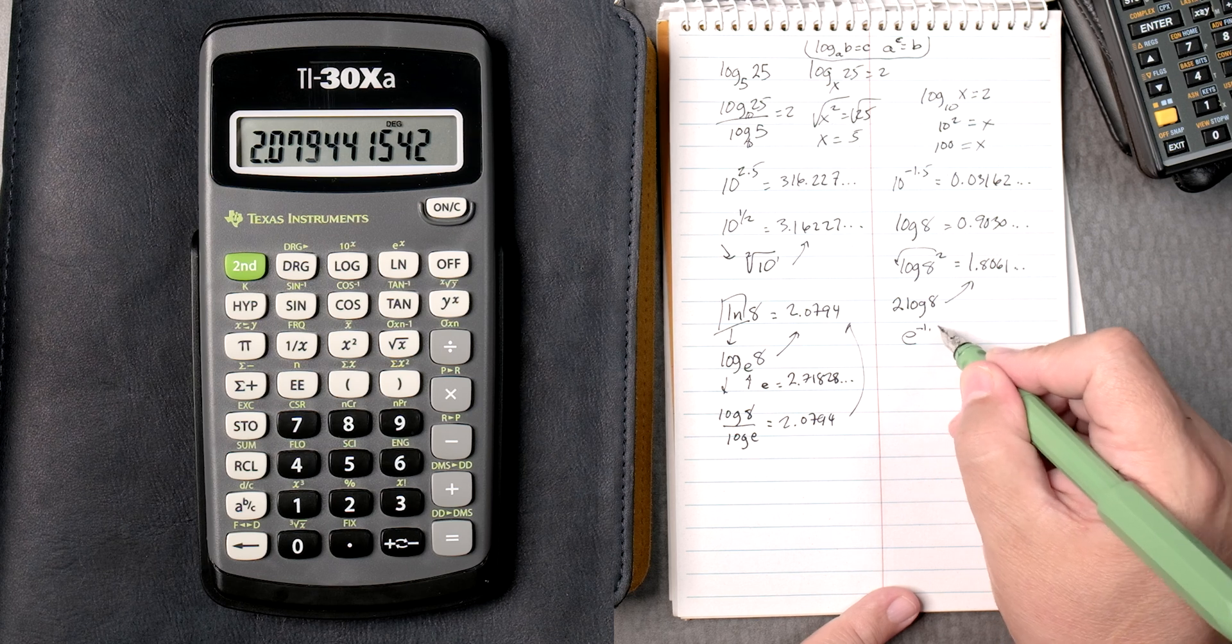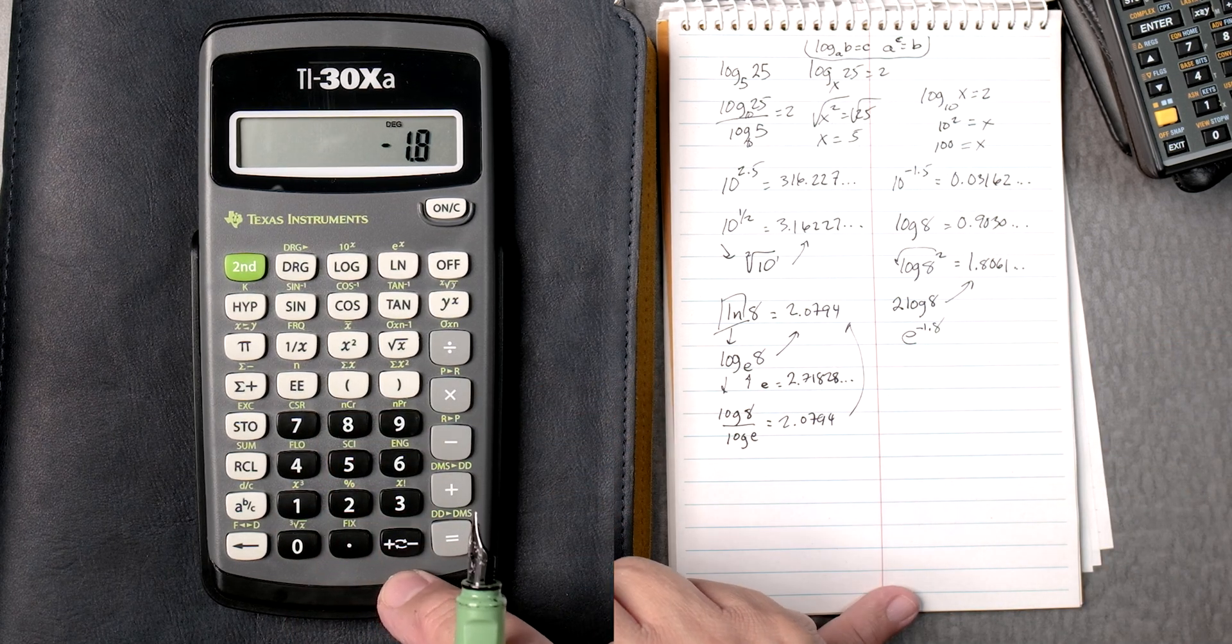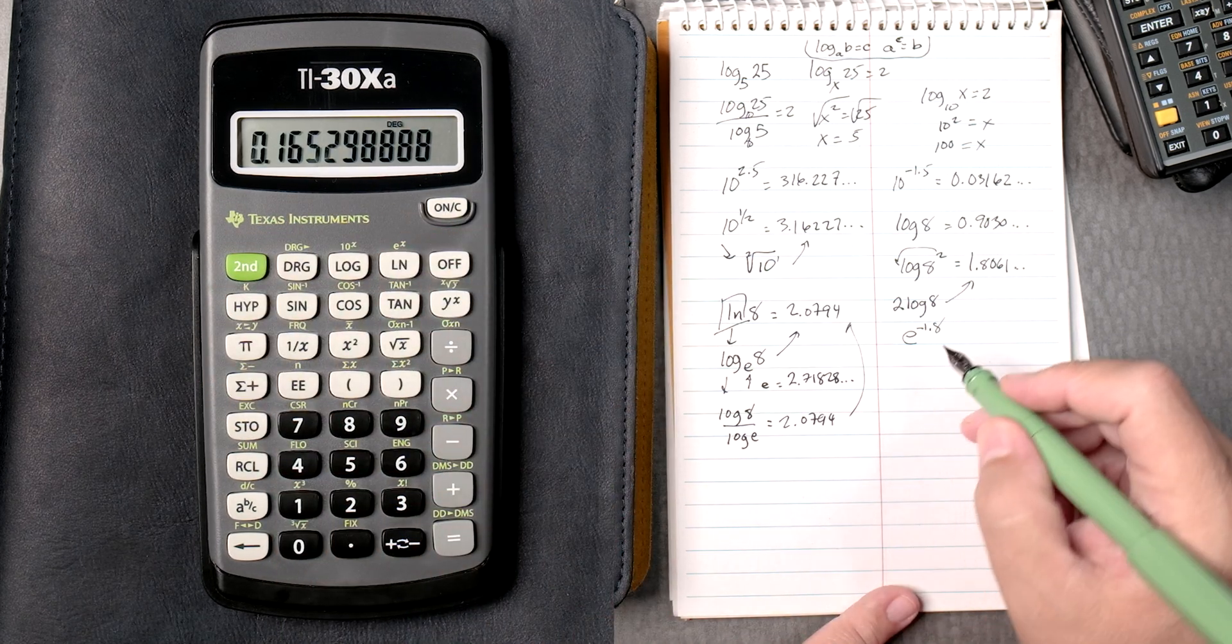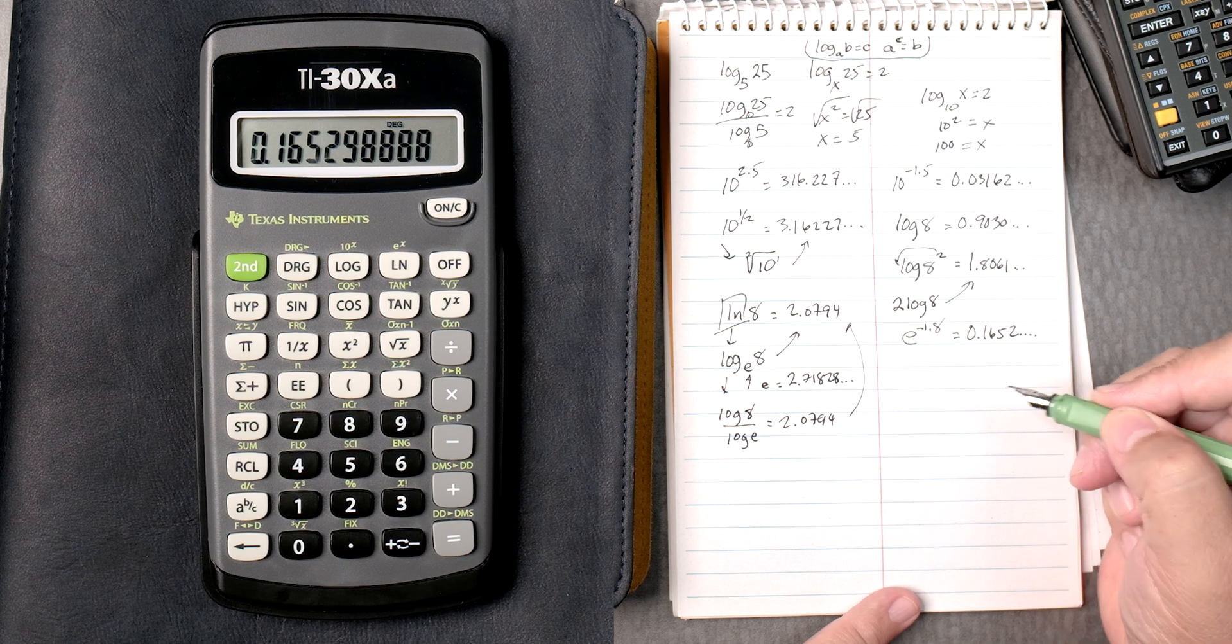E to the negative 1.8, 1.8 plus or minus e, and then the second natural log gives you 0.1652 and so forth.